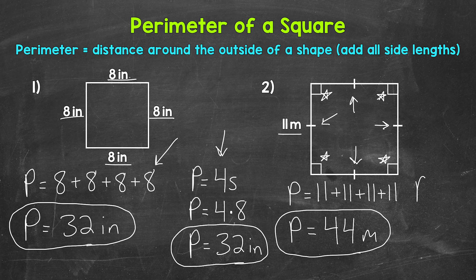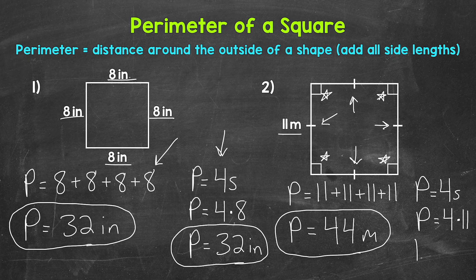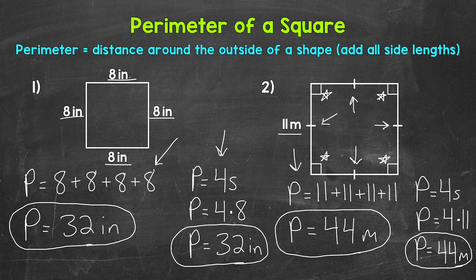We can also find the perimeter of a square by multiplying a side length by 4, using the formula perimeter equals 4s. Let's plug in 11 for s — so 4 times 11 gives us a perimeter of 44 meters. Again, we can find the perimeter of a square by either adding all of the side lengths, all four sides, or we can multiply a side length by 4, since it's a square and all of the sides are the same.